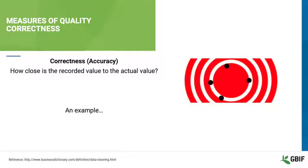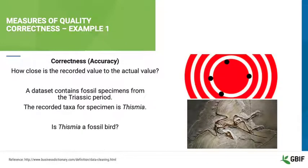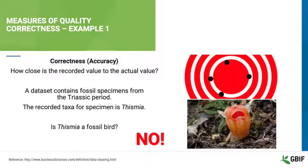For example, let's imagine your dataset contains records of fossil bird specimens from the early Triassic period. The taxonomic name for a number of specimens in your dataset is recorded as Thysmia. Is Thysmia a taxon of ancient birds? In this case, the answer is no. Thysmia is a very rare plant from the state of Illinois in the United States. As a result, the correctness or accuracy of the taxonomic name is low, perhaps because the data entry technician was not a paleontologist. All of the names in the dataset might need to be checked and corrected by an expert before the data can be used.